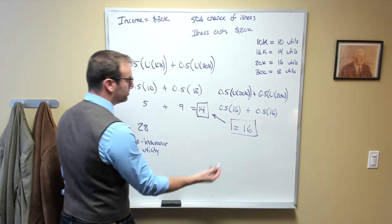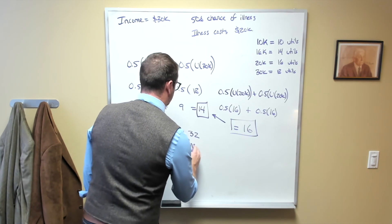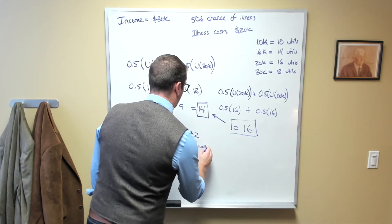So this means over two years, they get 32. And this would be their insurance utility.